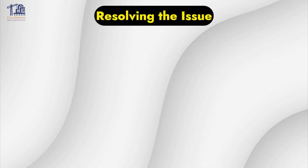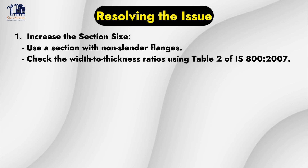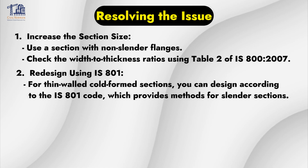To resolve this issue, you have two options. First, increase the section size — use a section with non-slender flanges, or check the width-to-thickness ratio using Table 2 of IS-800-2007. Second, redesign using IS-801: for thin welded or cold-formed sections, you can design according to IS-801, which provides the method for slender sections.